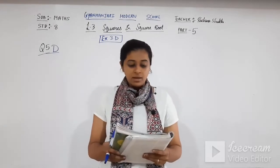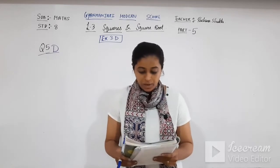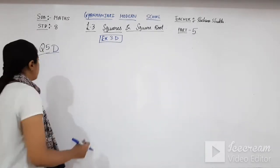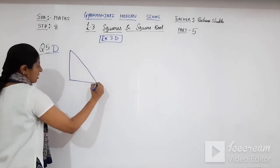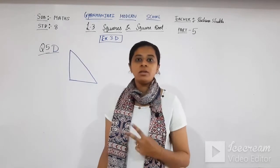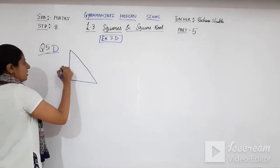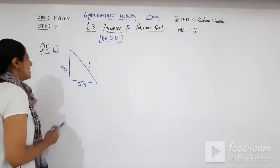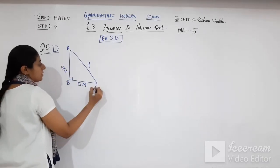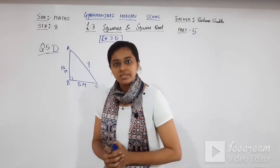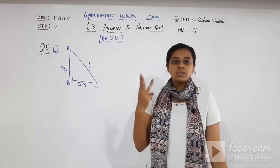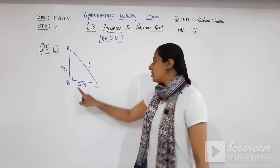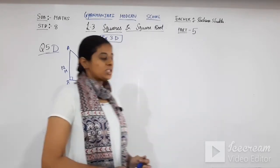Question 5D: find the length of the hypotenuse of a right-angled triangle whose other sides are 12 meter and 5 meter. One right-angled triangle is given with two sides: AB = 12 meter and BC = 5 meter. We name the triangle as A, B (right angle), and C. You have to find out the hypotenuse, which is the third side AC.